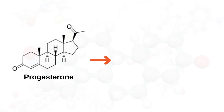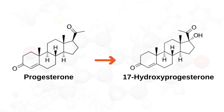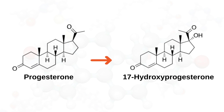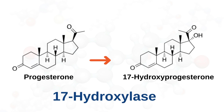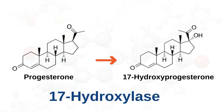Progesterone is converted to 17-hydroxyprogesterone. This adds an OH group at carbon-17, and this reaction is catalyzed by 17-hydroxylase.